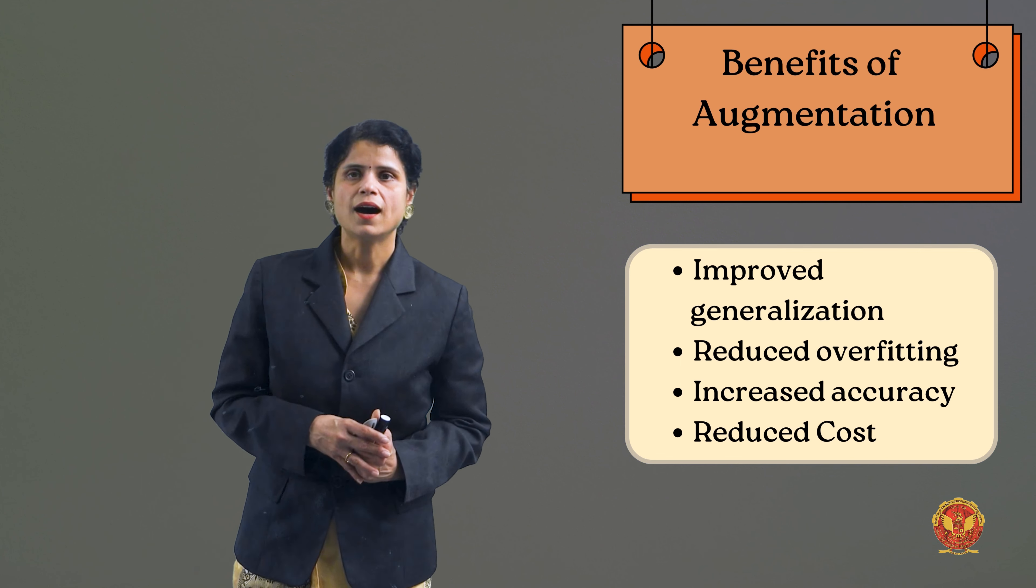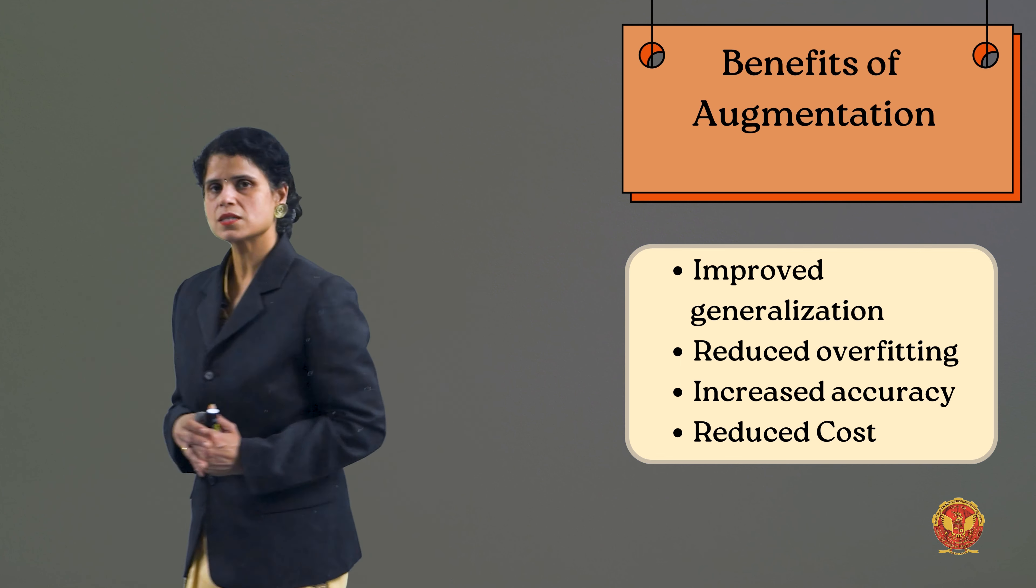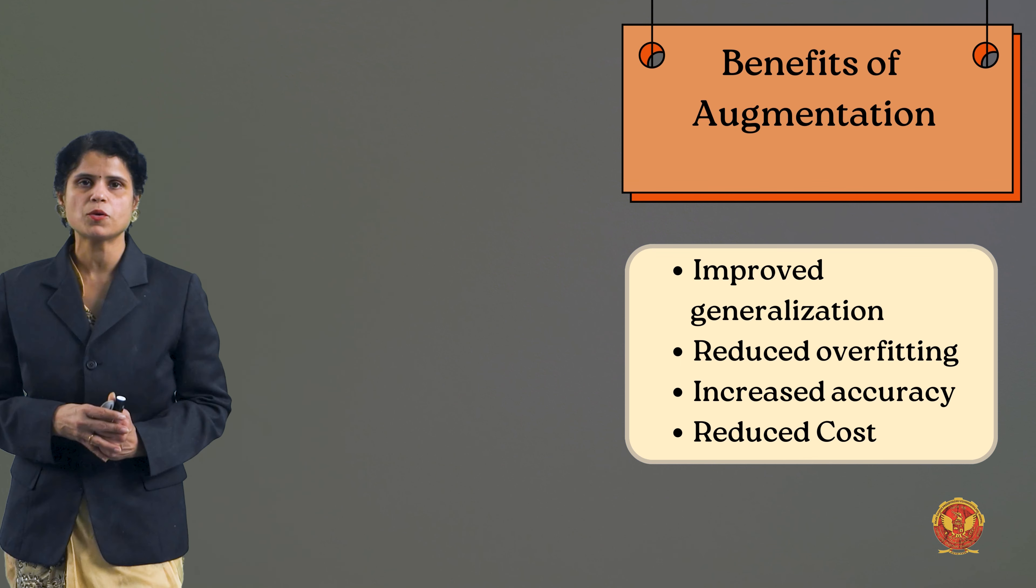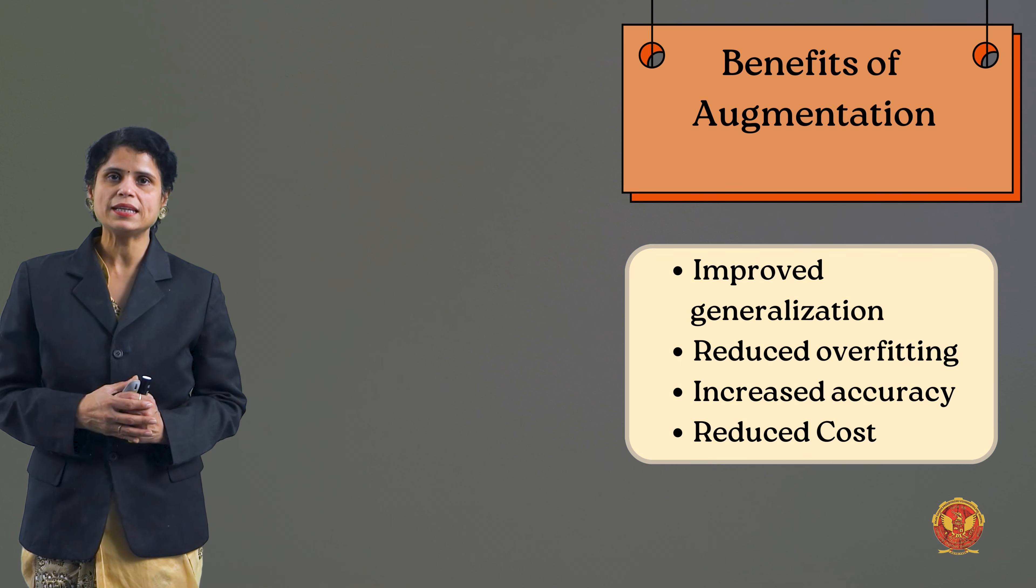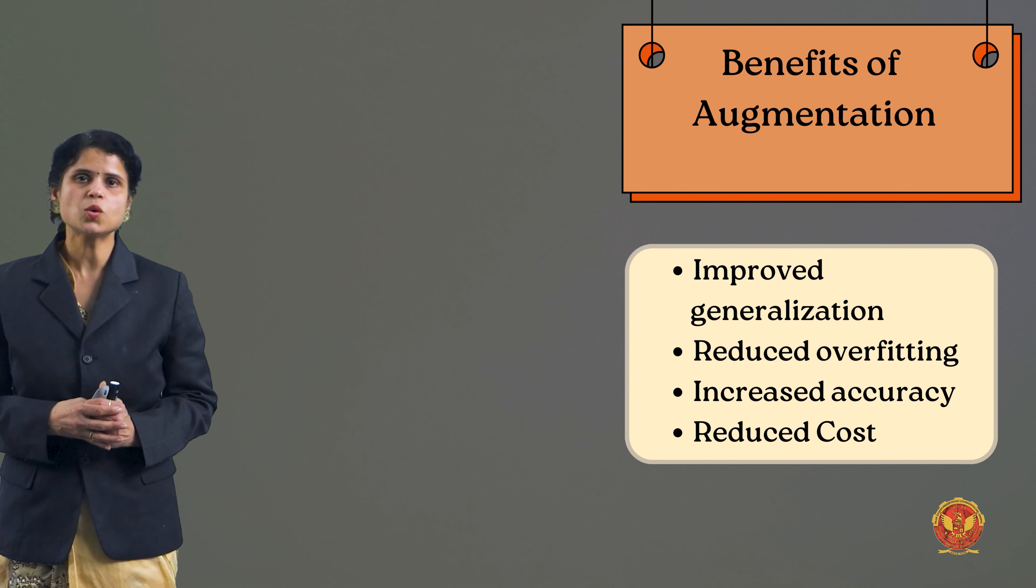Overfitting is a new word. You can understand that when you train on the same data points, the training is very good but the testing is bad. We call it overfitting. If I show an image of an apple to a kid, then the kid understands that the apple is like this. But when I am showing another apple, the kid is not able to recognize it. So this is overfitting. Overfitting gives good results in training, but during testing, your model has no good results.